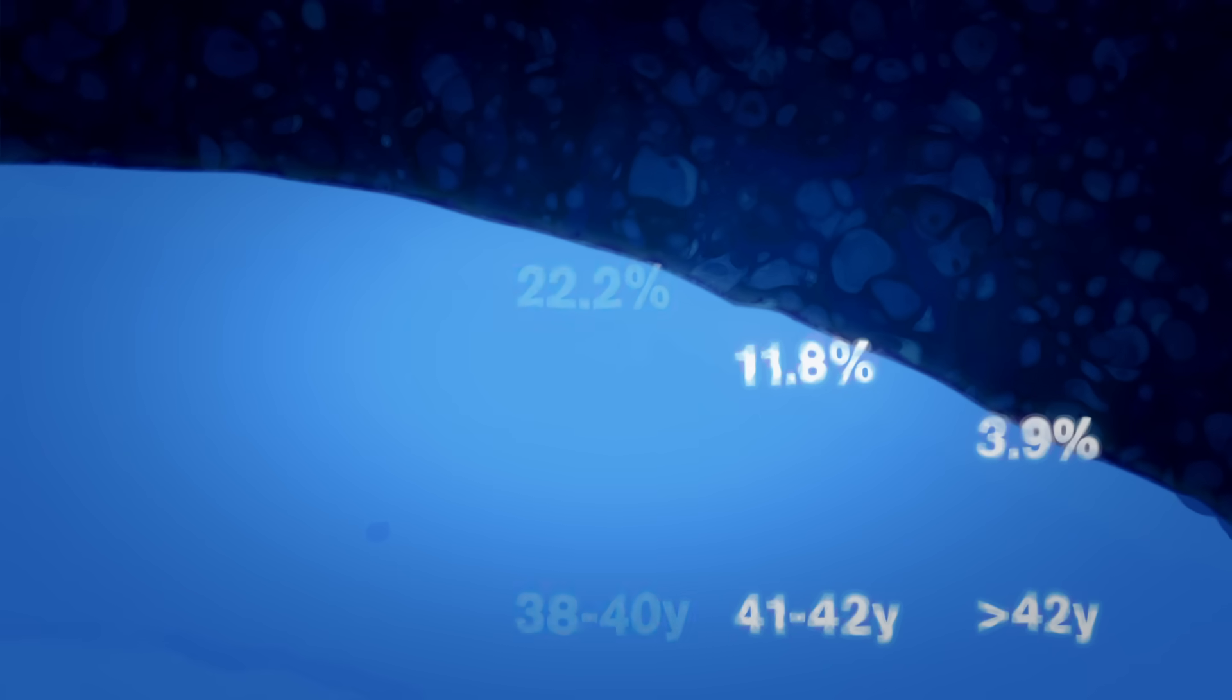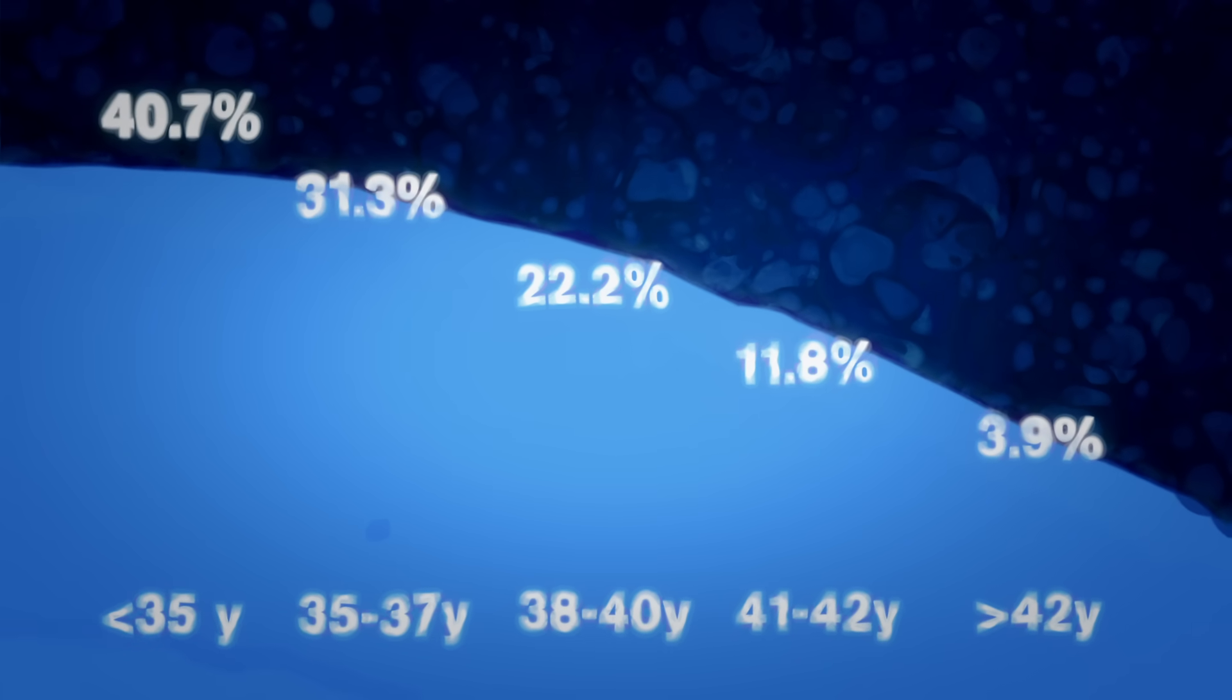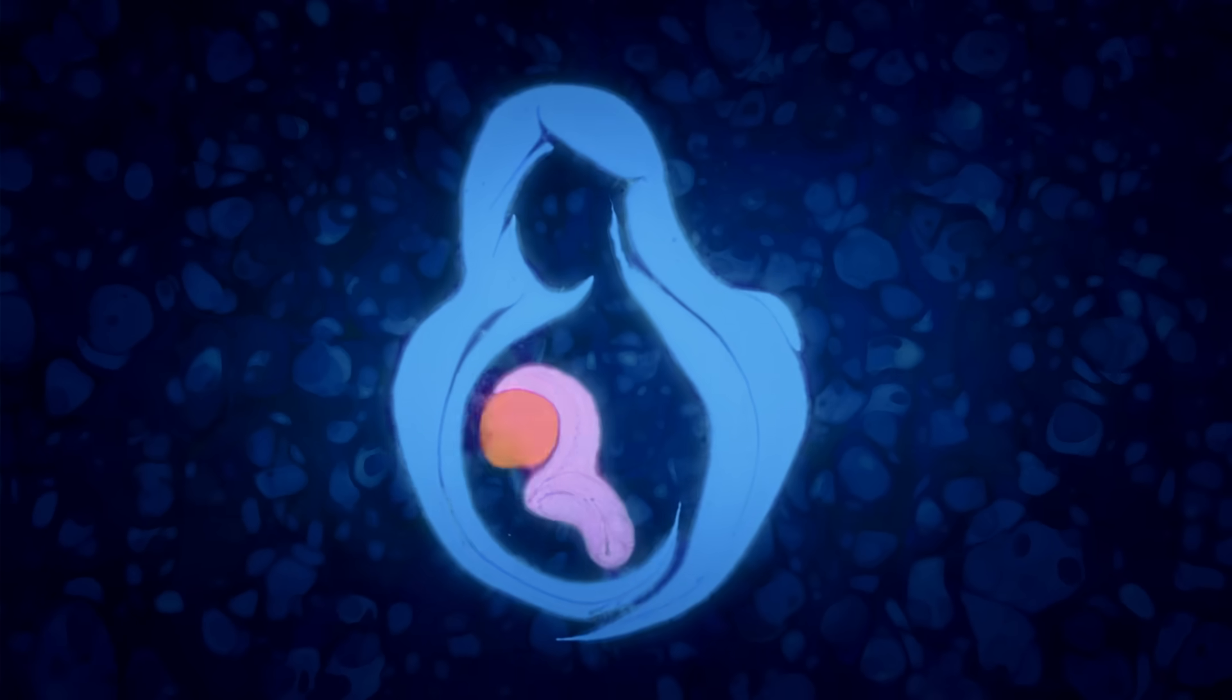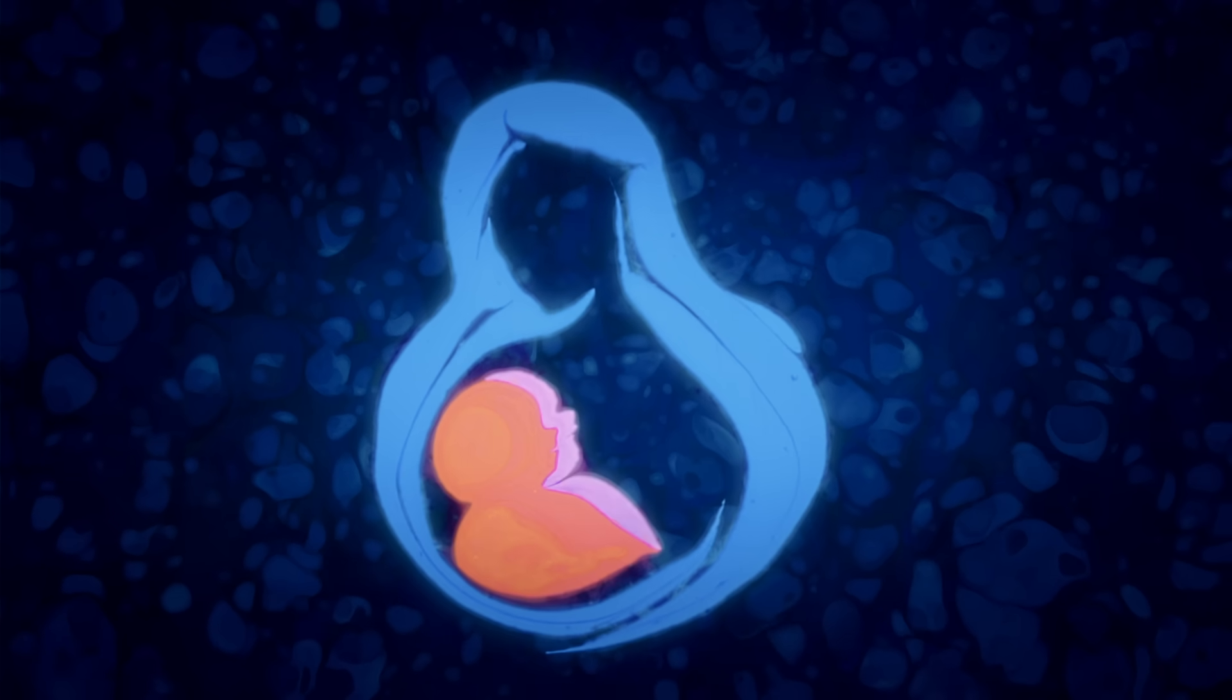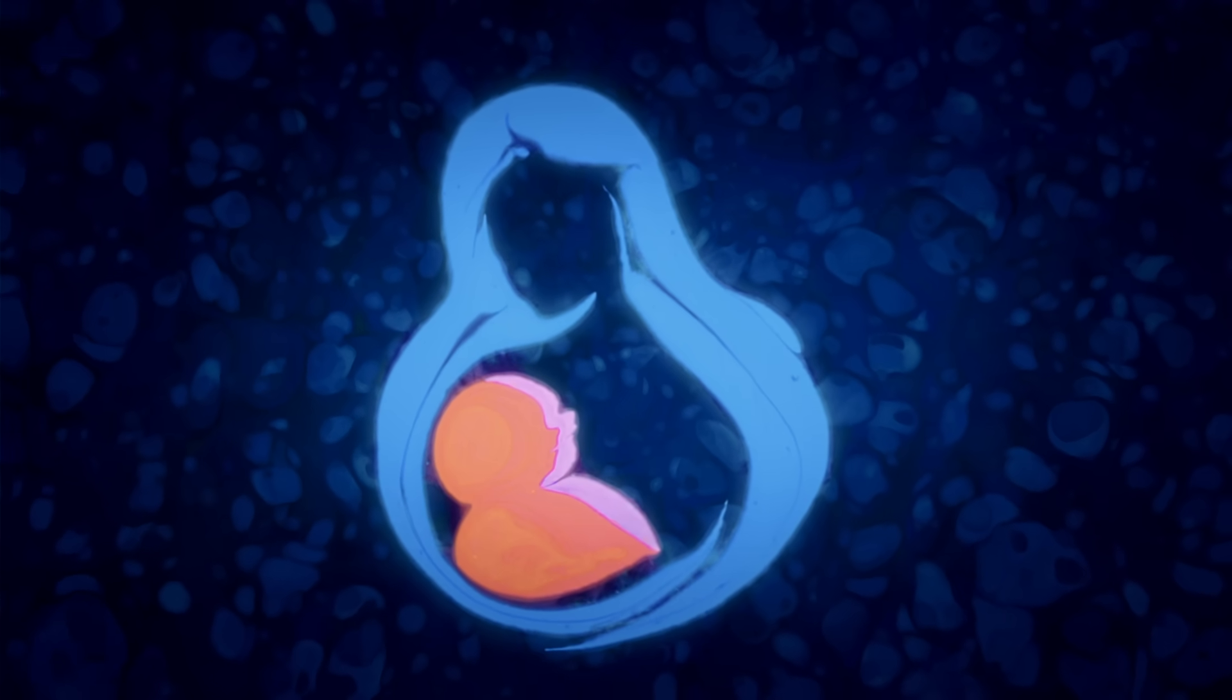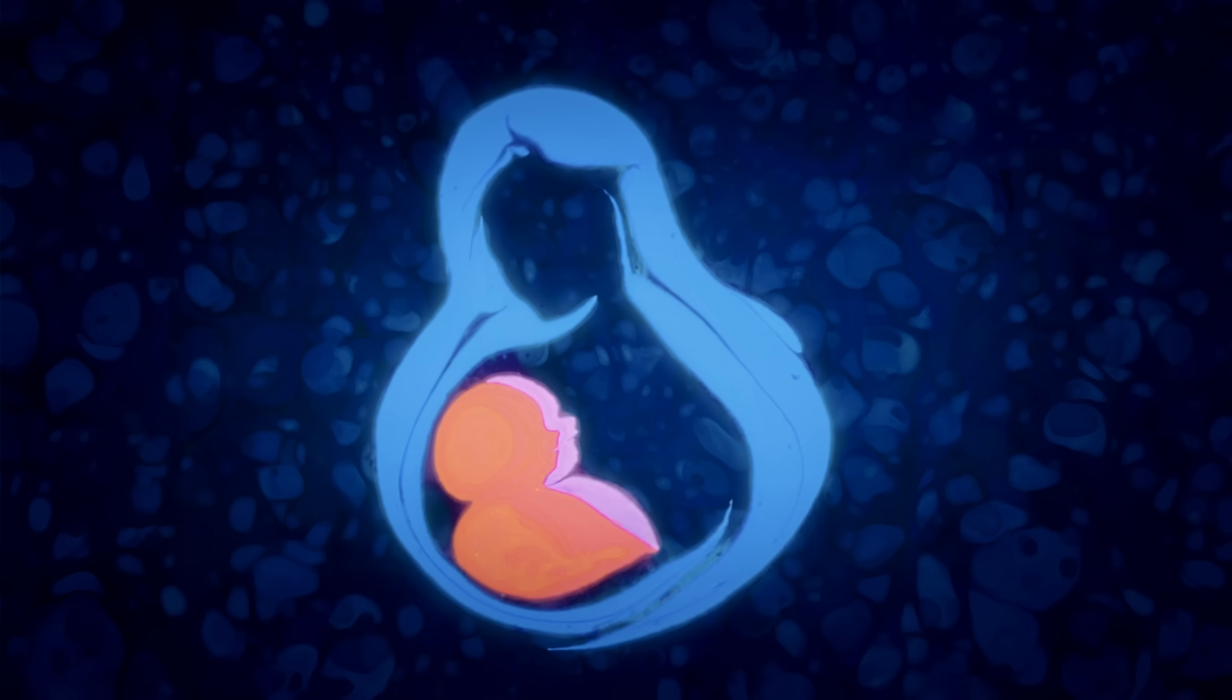To increase the odds of success, which are as high as 40% for a woman younger than 35, doctors sometimes transfer multiple embryos at once, which is why IVF results in twins and triplets more often than natural pregnancies.